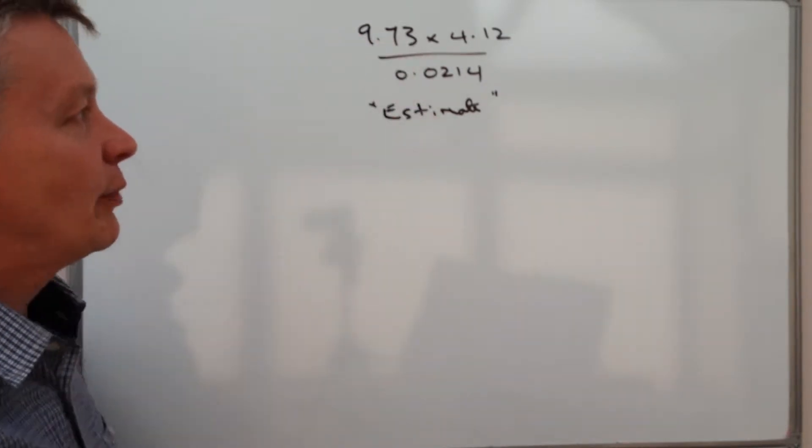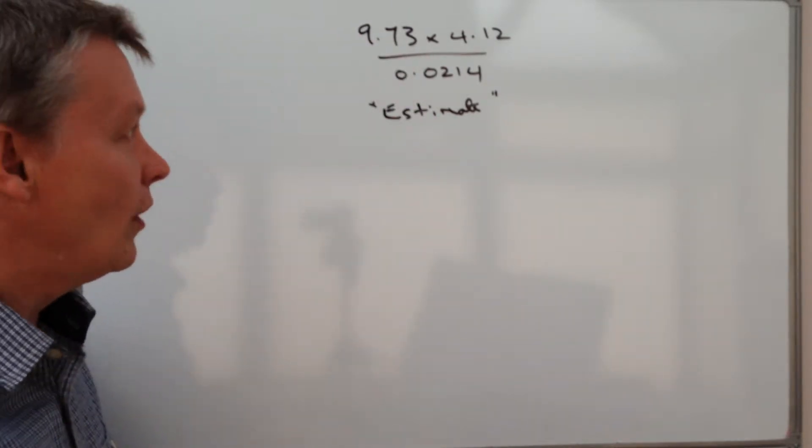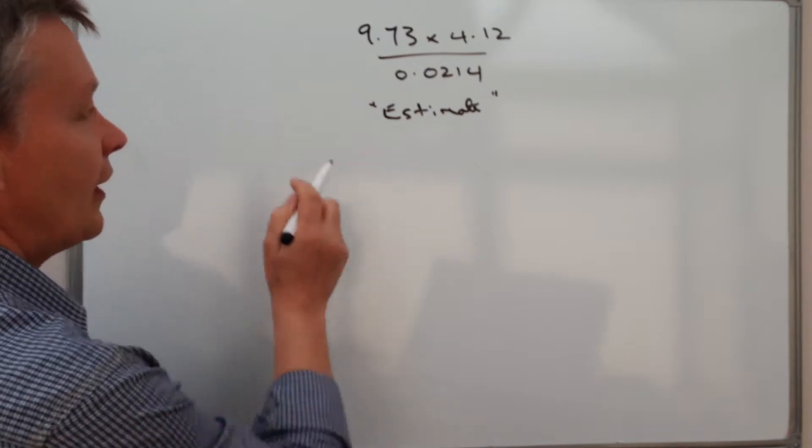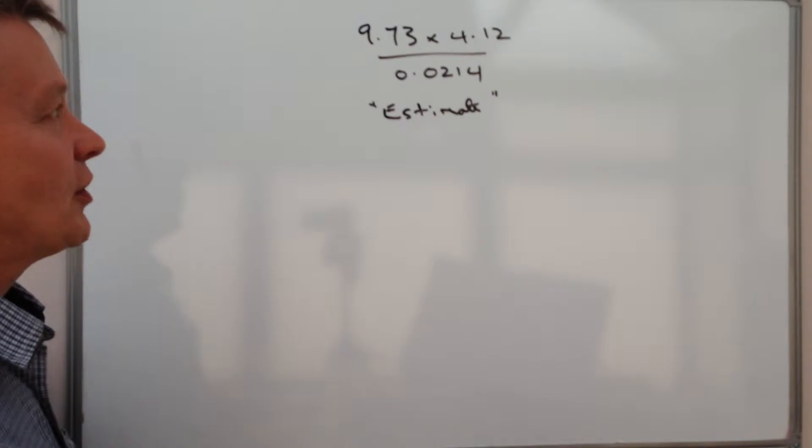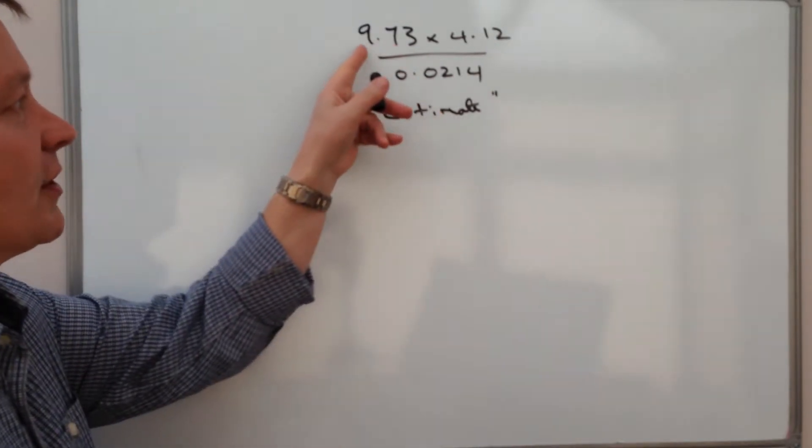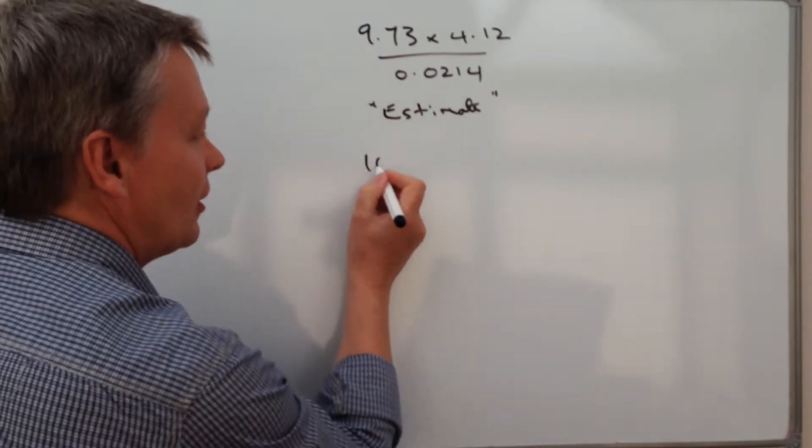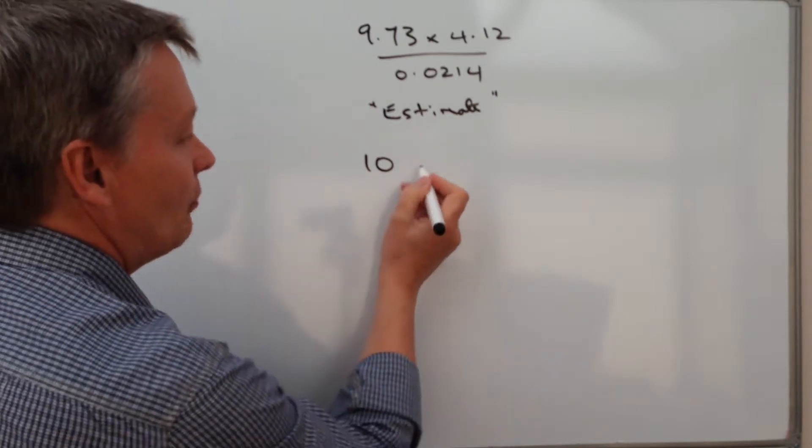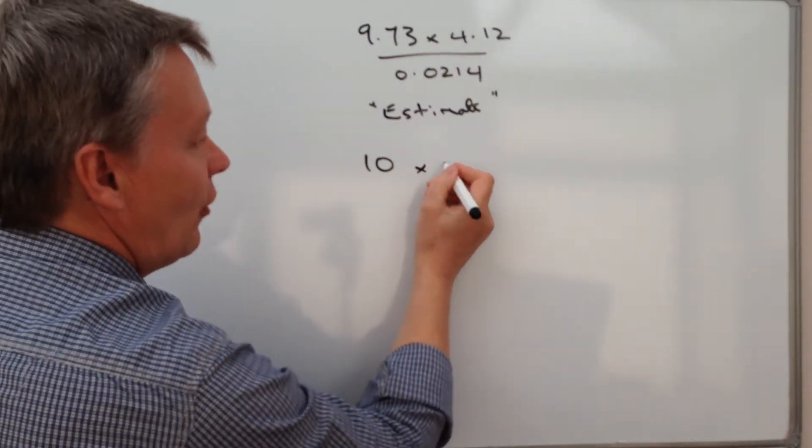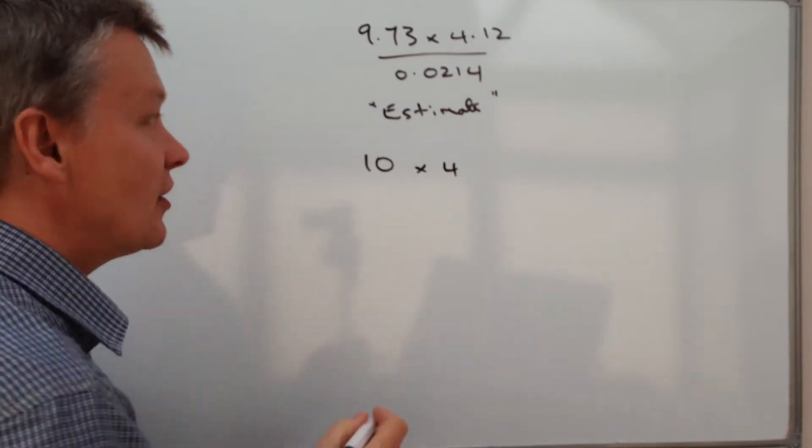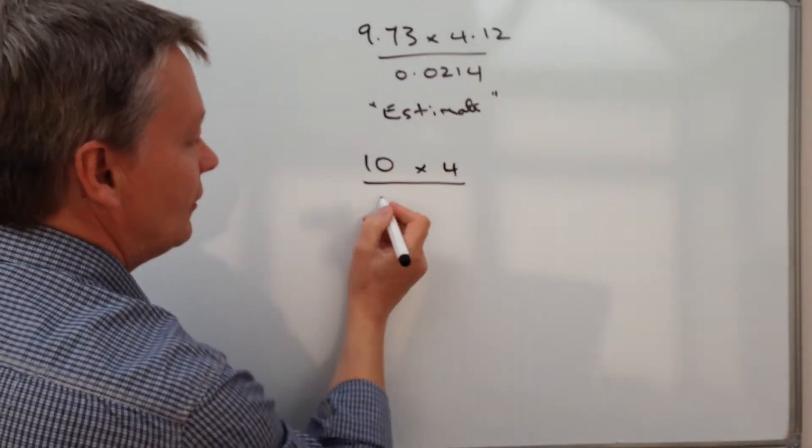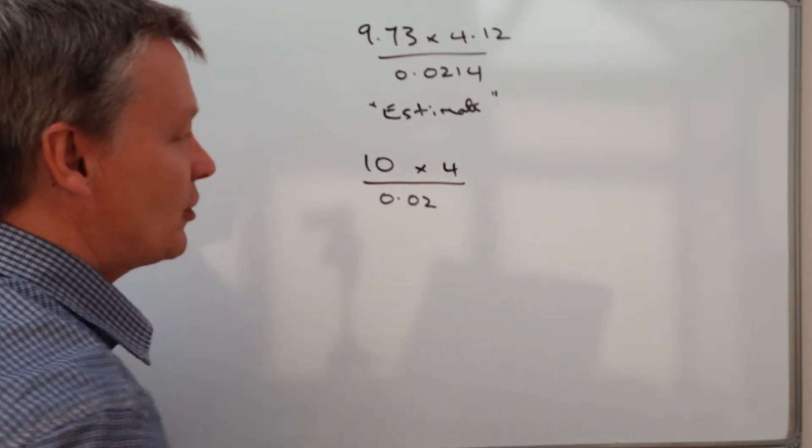So at the moment I've got 9.73. Well, to one significant figure, I look at my first significant figure which is 9. I'm going to need to change that because the 7 is going to round this up, so it's actually going to become 10. And then I'm going to multiply that by 4. So the first significant figure there is 4. I don't need to change that.